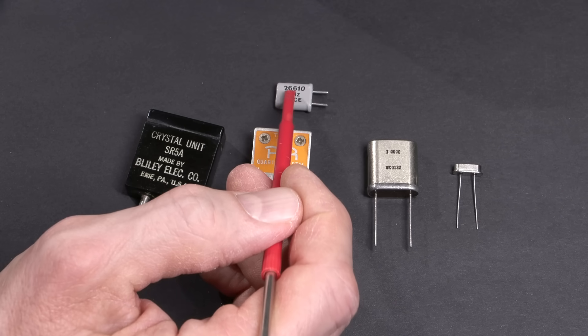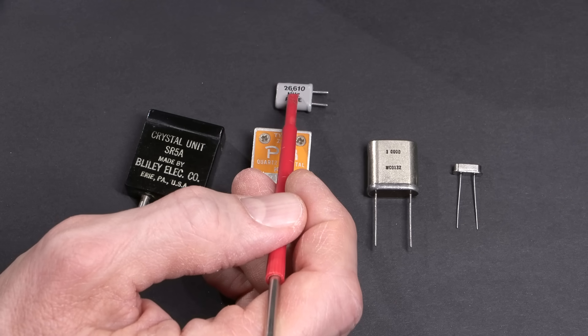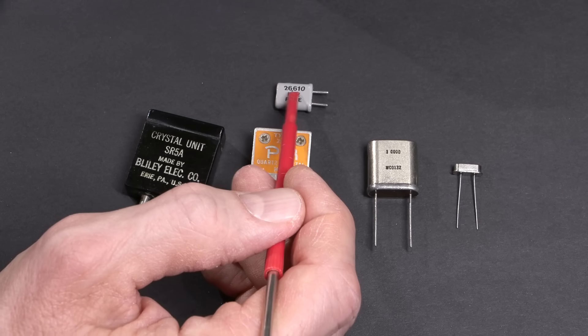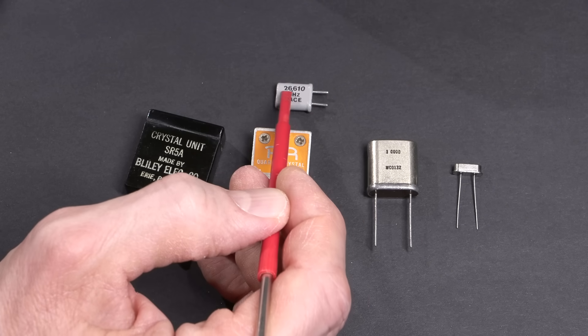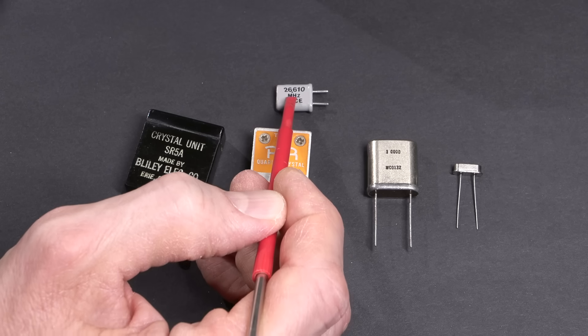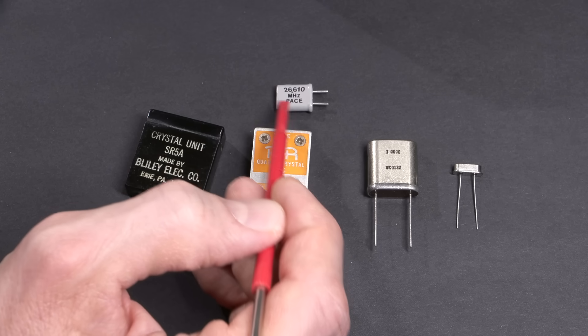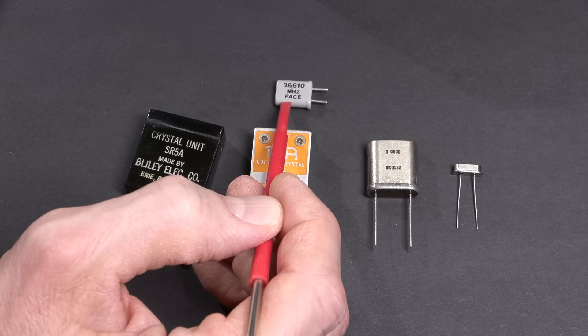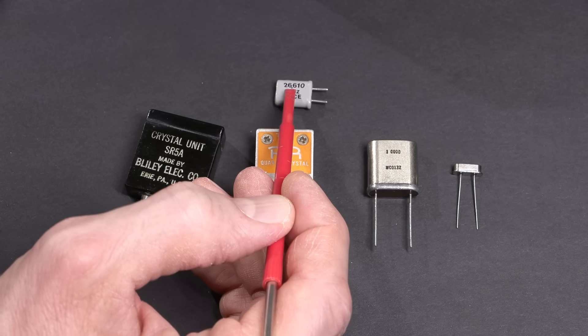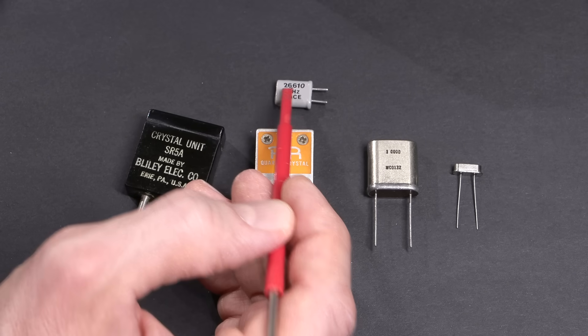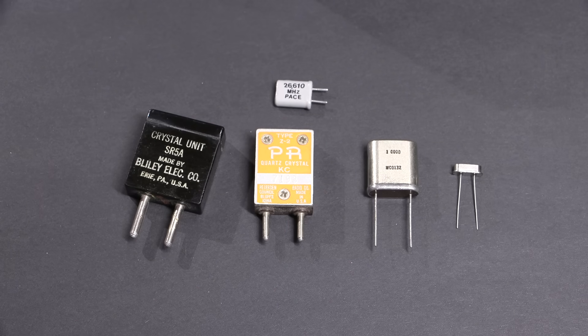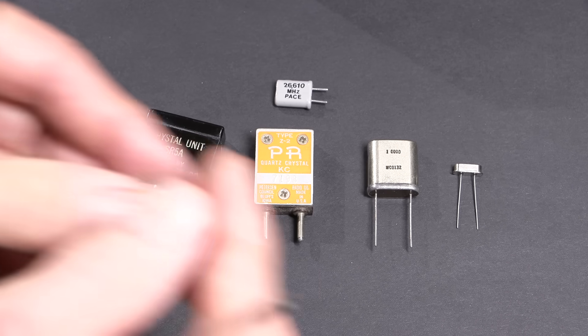In order to make this crystal oscillate at 26.610, you would create a tuned circuit tuned to 26.610 megacycles or megahertz, and the crystal would very comfortably oscillate at that because it's designed to operate at an overtone.